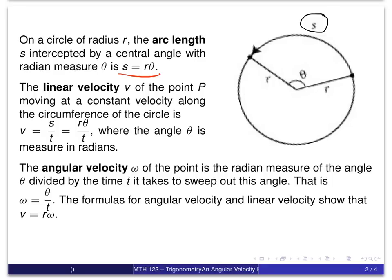We probably won't be using that formula directly, but one thing we do have here is what we mean by the linear velocity of a point on the circle. That's kind of a misnomer — the term linear velocity implies it's moving in a straight line, but it's moving around the circle. Here's the formula that relates the arc length s to the time t which the object travels, and of course s is equal to r theta.